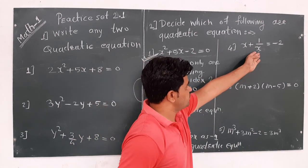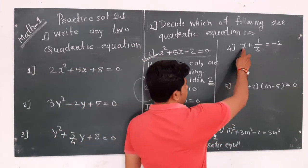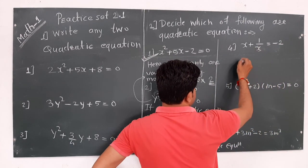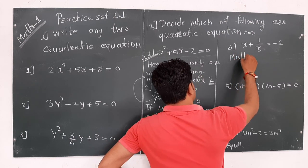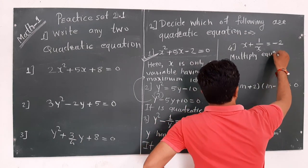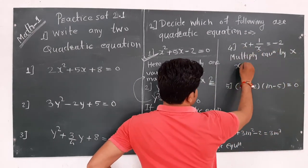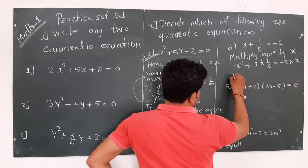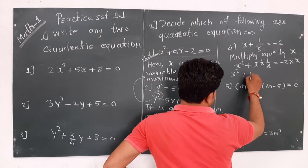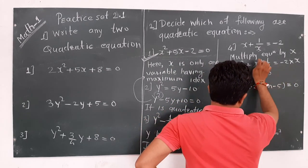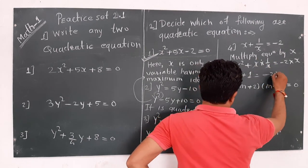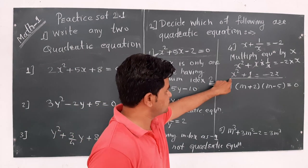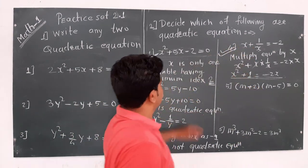Next equation: if we multiply through by x, we get x·x = x², and x·(1/x) cancels, leaving plus 1, and minus 2·x on the right. So we get x² + 2x + 1 = 0. Here, x is the only one variable having maximum index 2, so it is also a quadratic equation.